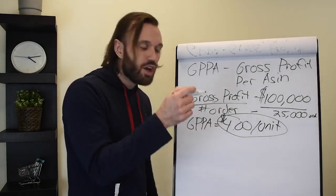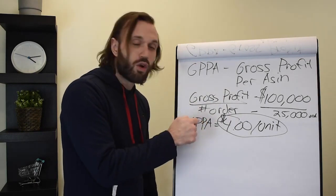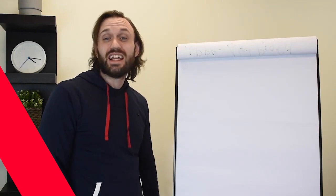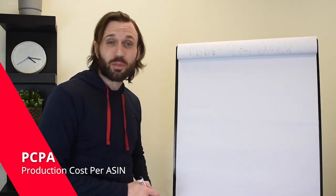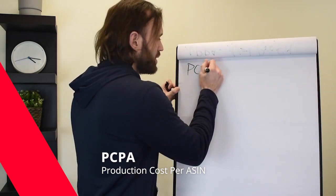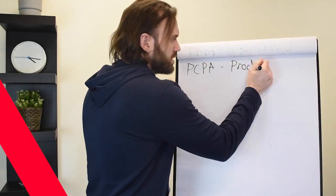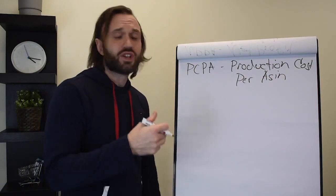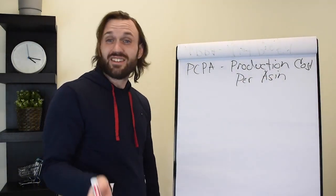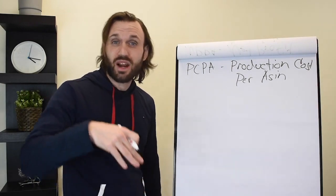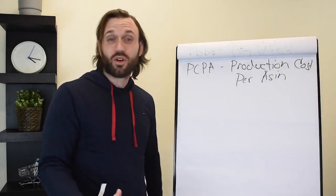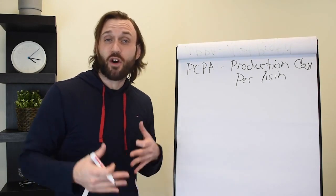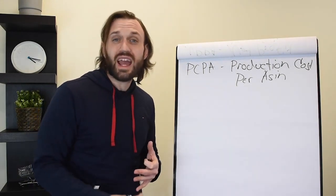Now the next piece of information you're going to need is your PCPA, or your production cost per ASIN. The way you calculate your production cost per ASIN is totaling your expenses, all your expenses—gas, labor, pallet jack, any dinners you may have went out on, all your expenses.